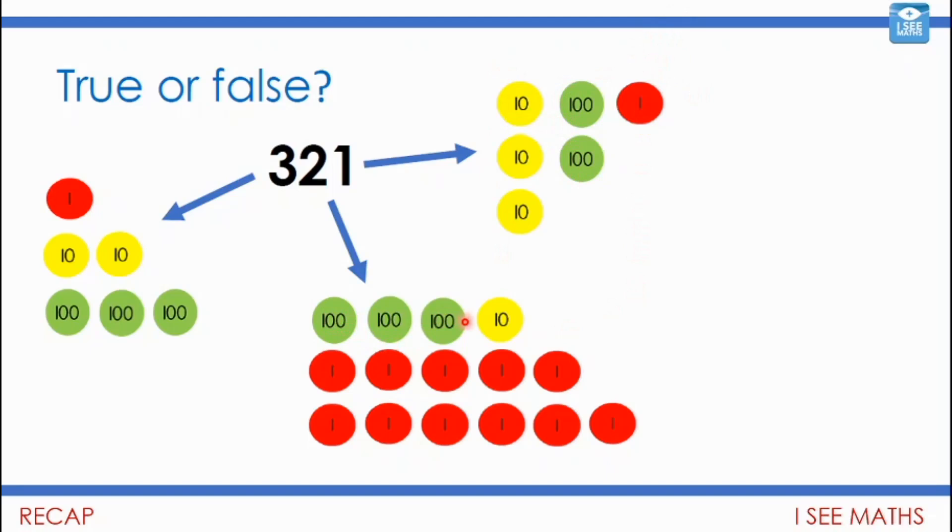And in this one, I've got three hundreds. I don't seem to have enough tens. I've only got one ten. Oh, but no, look. These ten ones is another ten. So I've got ten and another ten there. So that is 20. And then I've got that one. So yes, that one is 321.